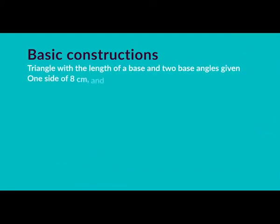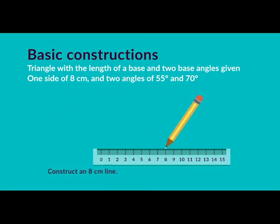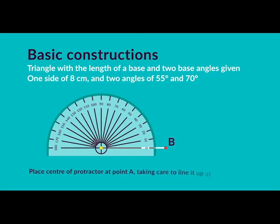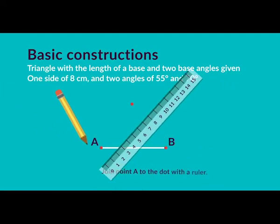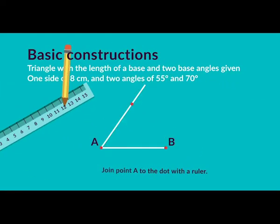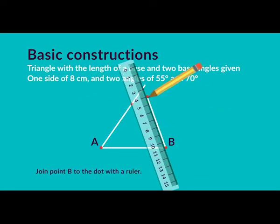Constructing a triangle with one side of 8cm and two angles of 55 degrees and 70 degrees given. You'll need a protractor for this. Construct an 8cm line and label one endpoint A and the other B. Place the centre of the protractor at point A, lining it up at 0 degrees, measure an angle of 55 degrees, and mark it with a dot. Join point A to the dot with a ruler. Move the protractor to point B, measure an angle of 70 degrees, mark it, and join point B to the dot.